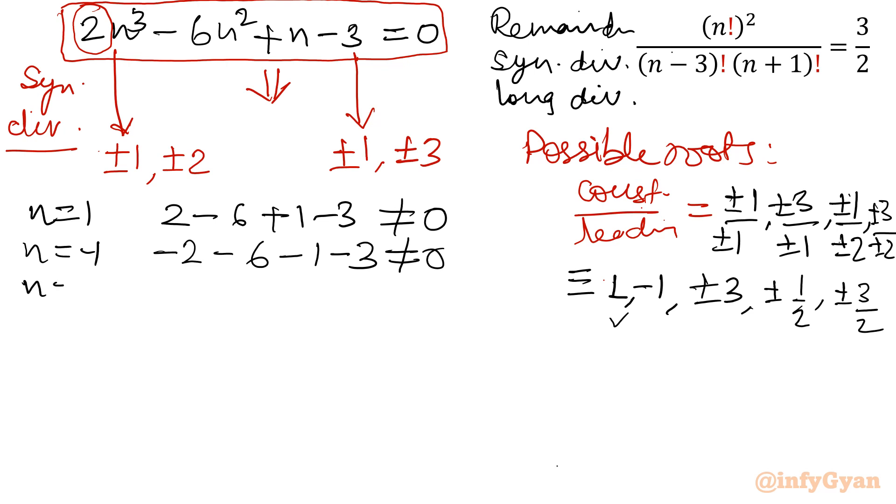Let me put n equal to 3. So 2 times 3 cube, 27 times 2, 54, minus 9 into 6, 54, plus 3 minus 3, that is equal to 0, as you can see. That means 1 root is confirmed, that is n equal to 3.